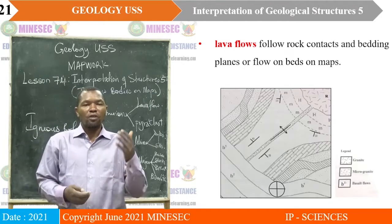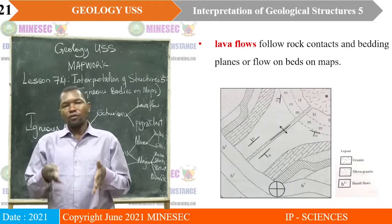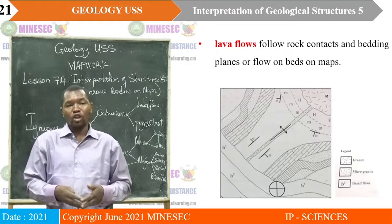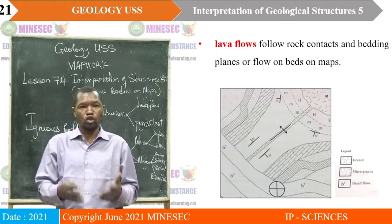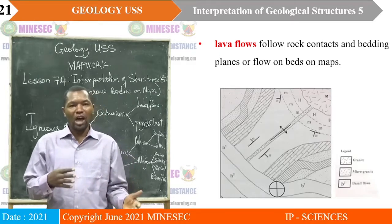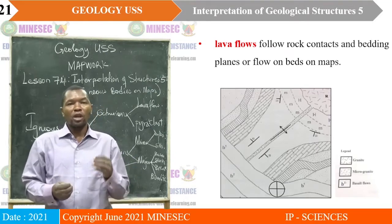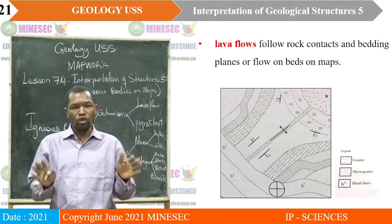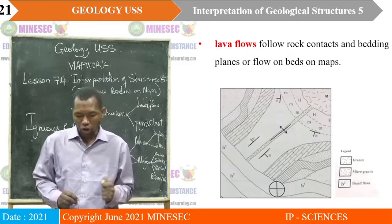All lava flows on maps are indicated by volcanics or pyroclastics. Volcanic basic: we have basalt and scoria. Volcanic intermediate: you have andesite and trachyte. Volcanic acid: you have obsidian, rhyolite, pumice, and scoria. Generally, pyroclasts include tuff, lapilli, ignimbrites, volcanic bombs, and cumites. The coarse-grained equivalents are called agglomerates. When you see them on the map, you know they are pyroclasts. It is very easy to interpret igneous bodies on maps.